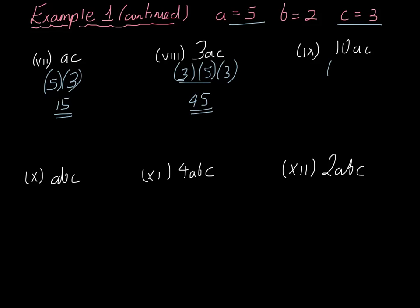And 10ac, well that would be 10 in brackets, 5 in brackets, and the 3 in brackets. 10 times 5 is 50, 50 times the 3 left over is equal to 150.